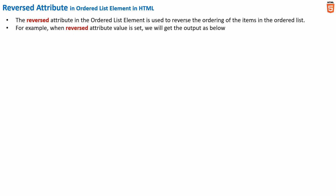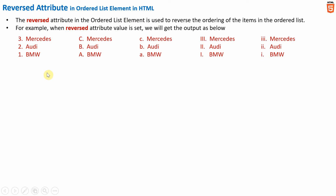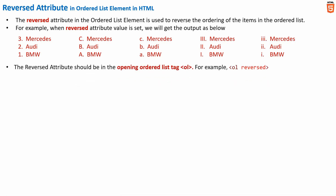For example, when the reverse attribute value is set, we will get the output as shown below. Here we have five different examples, and in all these examples the list is in the reverse order — that is, the ordered list is in the reverse order.